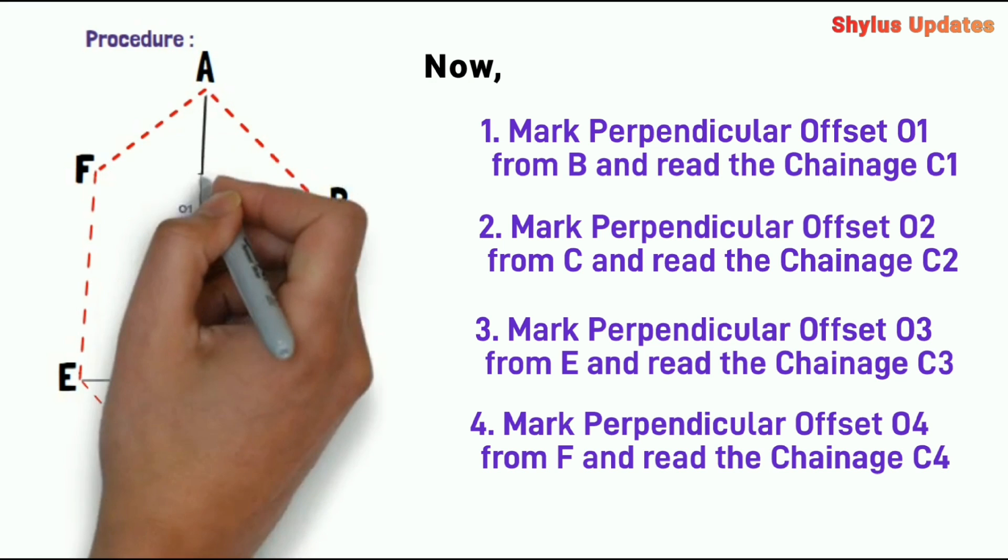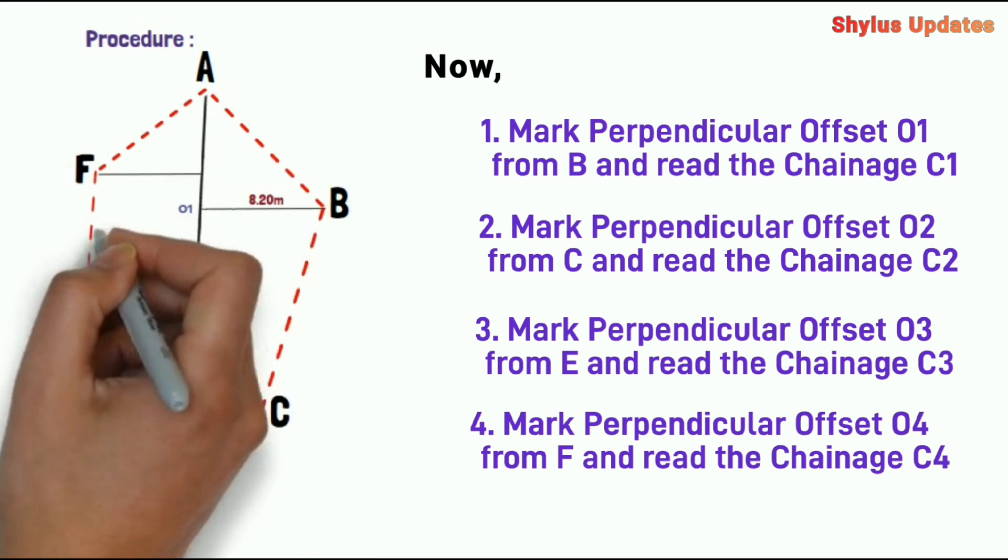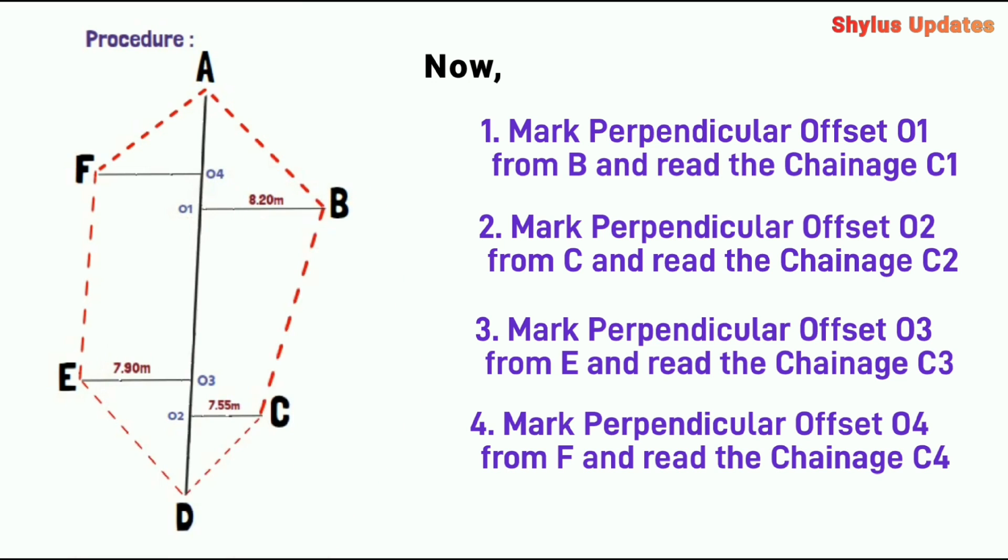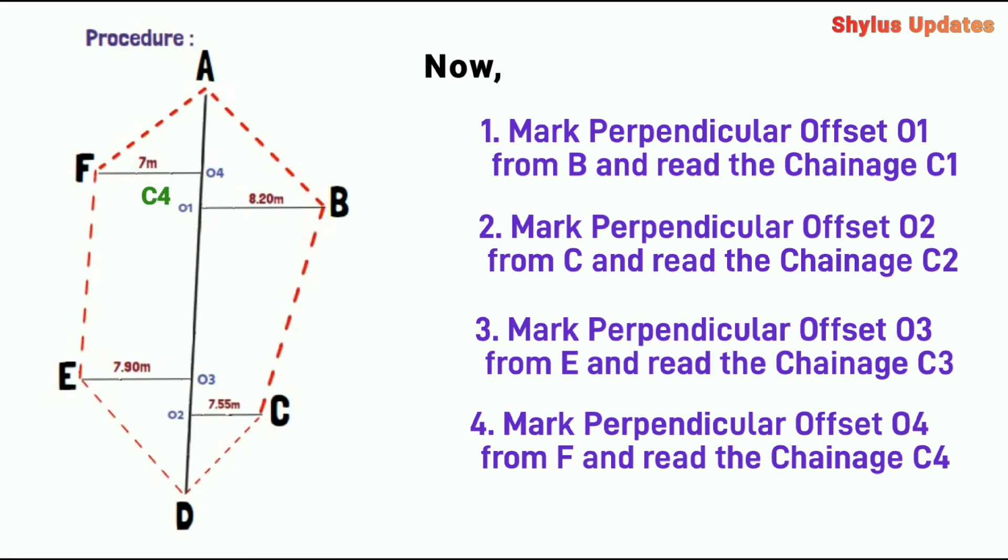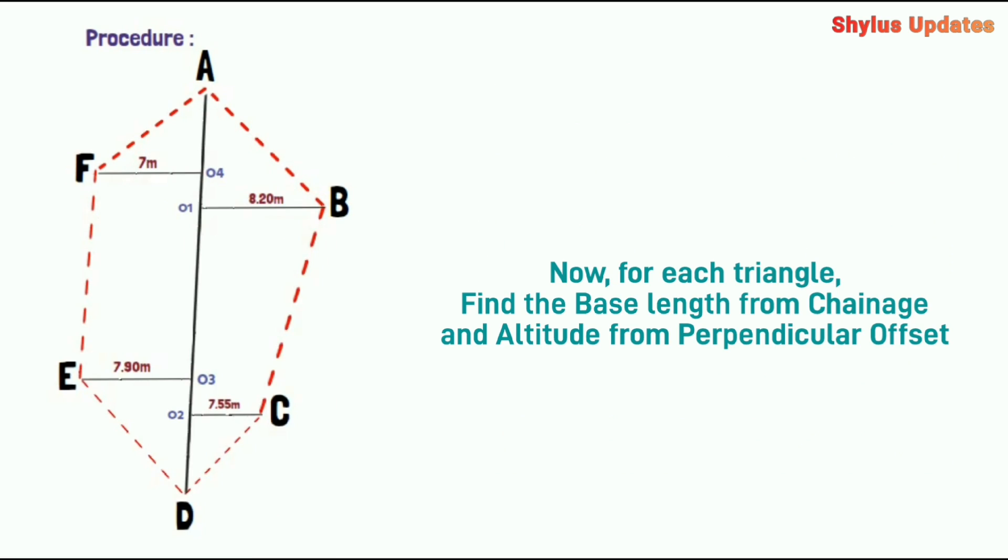Next, mark perpendicular offset O4 from F and read the chainage C4. The measurement value is 7.90 meters. Now, for each triangle, find the base length from chainage and altitude from the perpendicular offset.